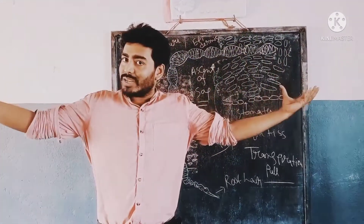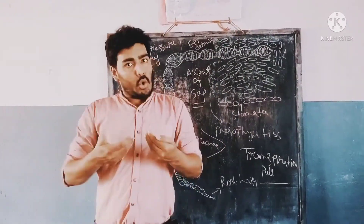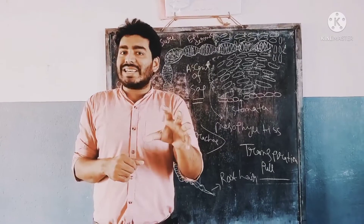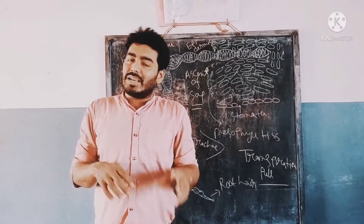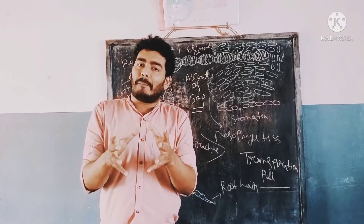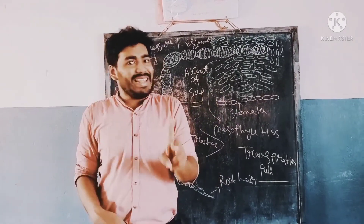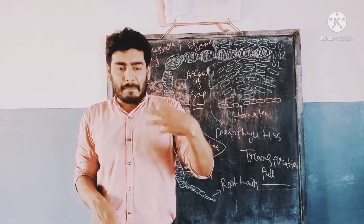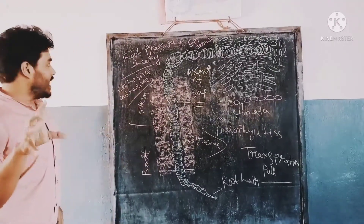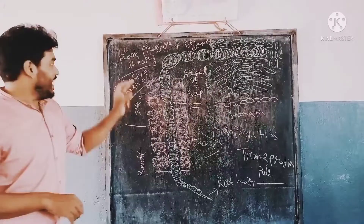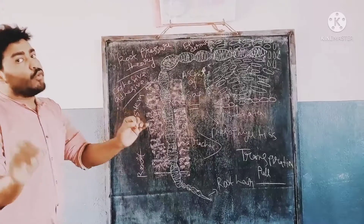When water comes out from the outer surface, water comes in through the root. This process is called ascent of sap. Many scientists have given ideas about the ascent of sap, and mainly two theories are recognized: root pressure theory and cohesive-adhesive force theory.